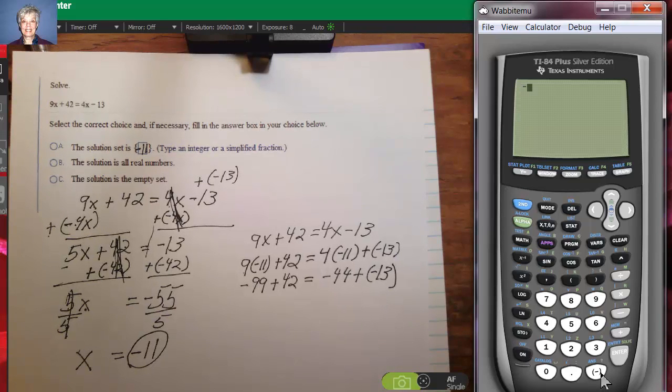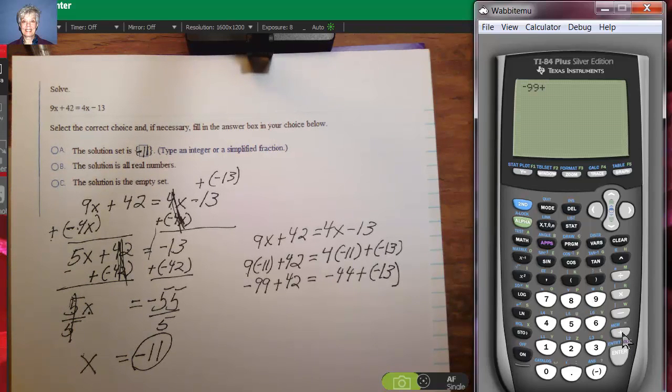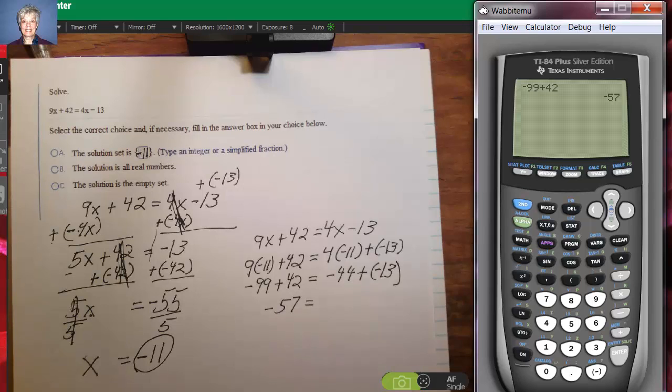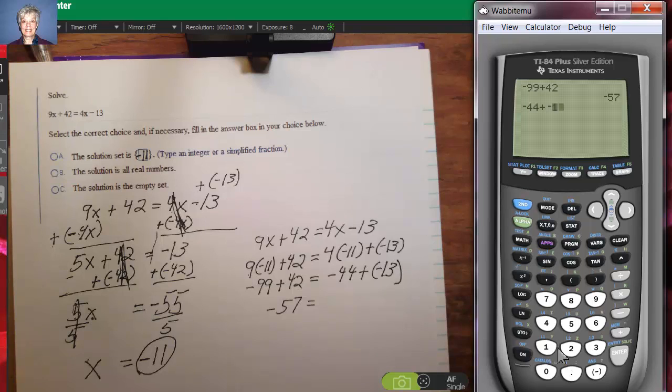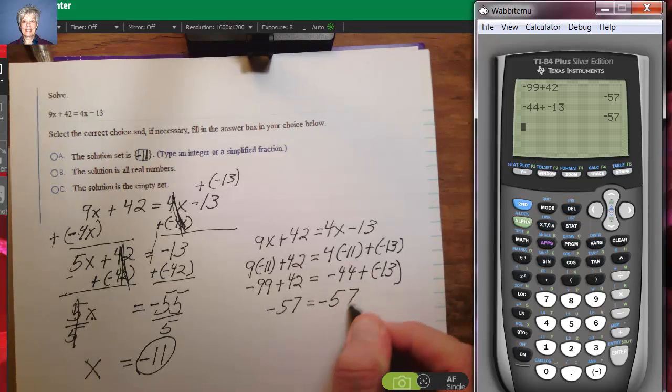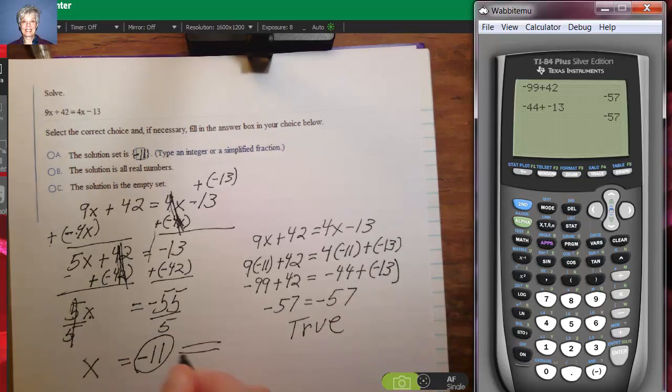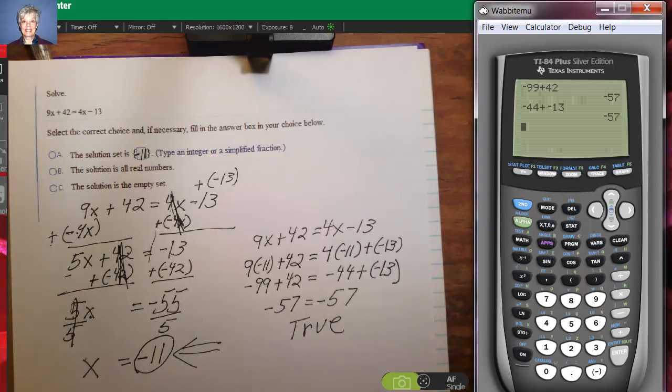Now we can actually just use the calculator. Negative 99 plus 42, enter. This says negative 57. Negative 44 plus negative 13, enter. That's negative 57. It's true that negative 57 equals negative 57. So since we have a true answer here, that means that this is the right answer for our x. That's the right solution to the equation.